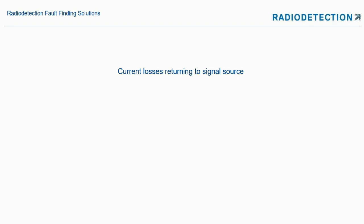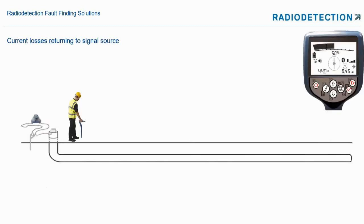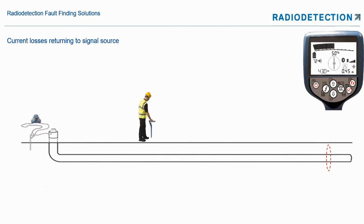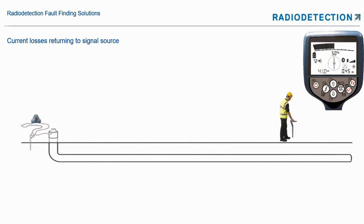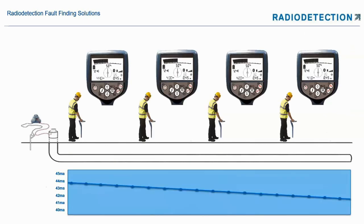Current losses return to the signal source — we're always going to get current loss as the current attenuates as it travels away from the connection point. So we might see 44 milliamps, then 43, 42, 41 — the signal attenuates over distance, obviously not to scale.